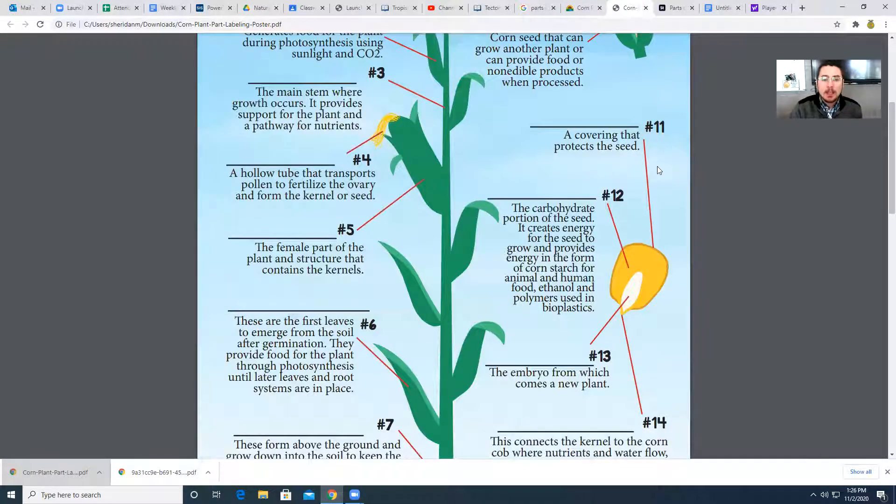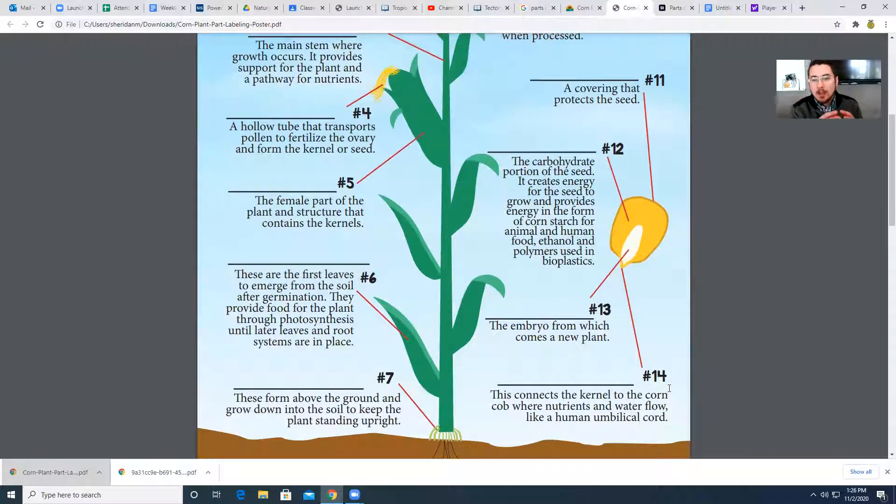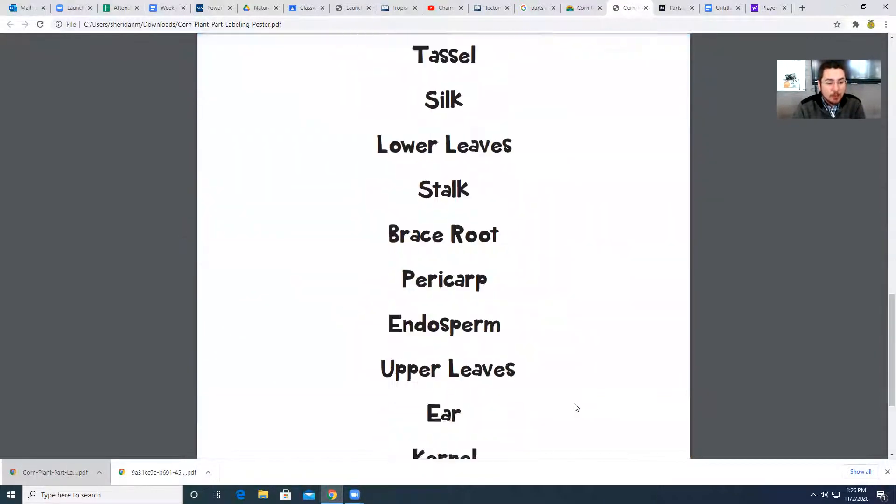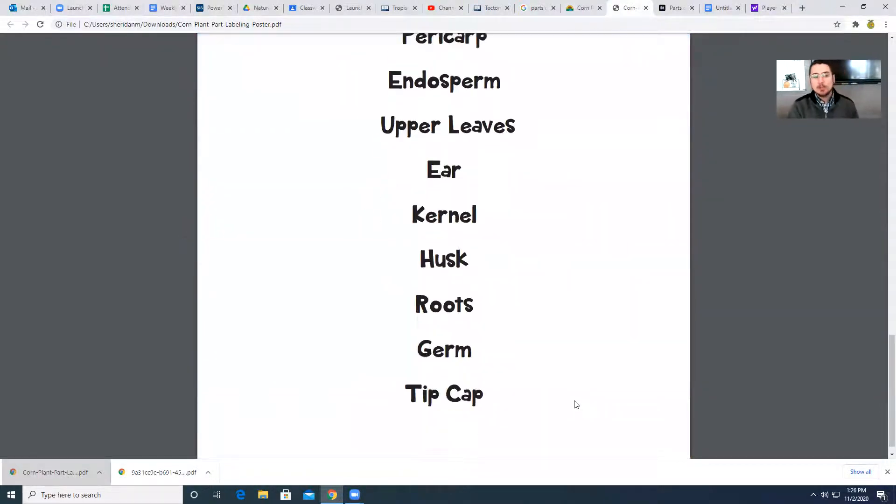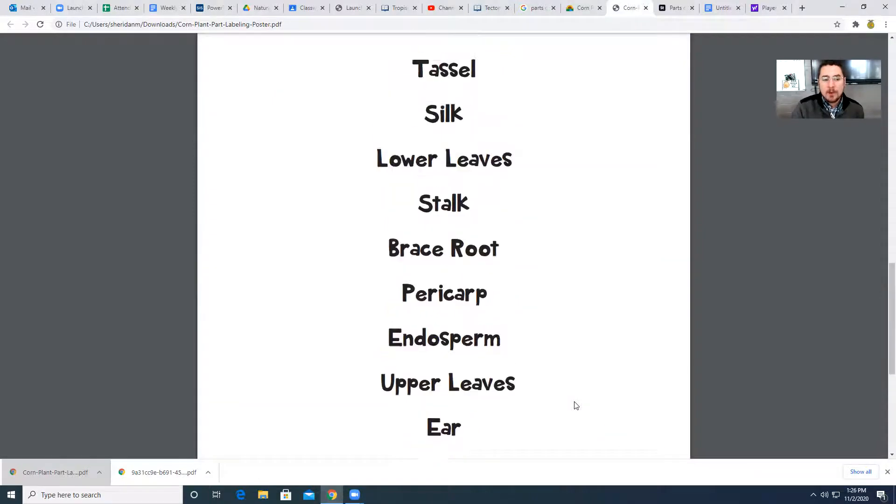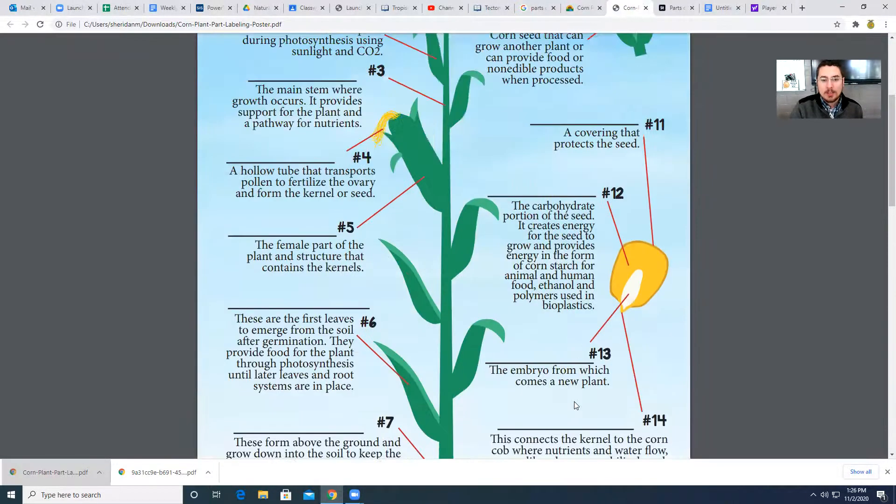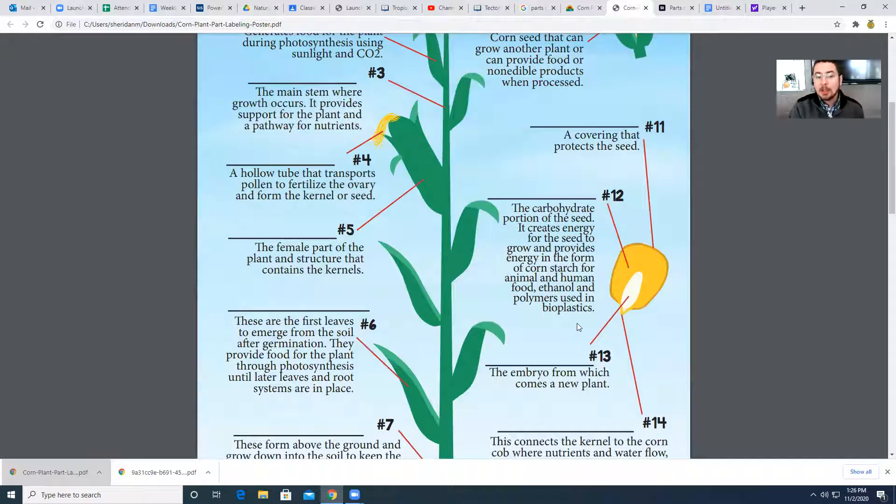What I do want to go through very quickly is number 11, 12, 13, and 14 because we haven't really studied the parts of the kernel. As you can see, you actually have a word bank down here. So I would expect that you could probably run through these and fairly quickly get through the first 10 words, and you'd be left with four that we haven't covered yet. So I want to go through those very quickly.